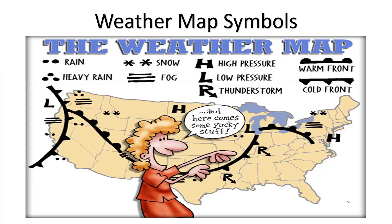Let's take a look at different symbols on the weather map. You can see that rain is shown by dots, and heavy rain is more dots. Snow looks like snowflakes, and fog looks like lines. The high pressure is H and the low pressure is L. Sometimes this R-looking symbol represents a thunderstorm, but usually people just draw in lightning bolts. The warm front is the line with circles, and the cold front is the line with triangles.